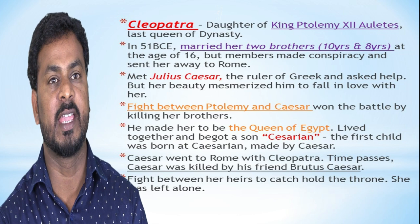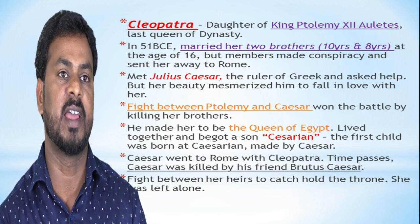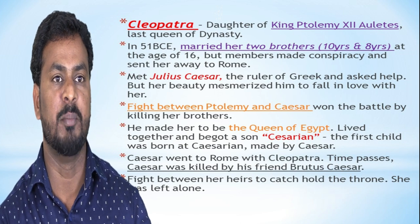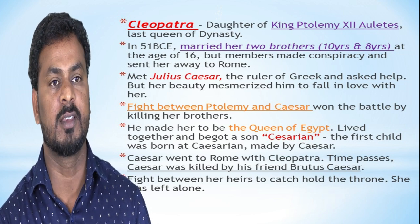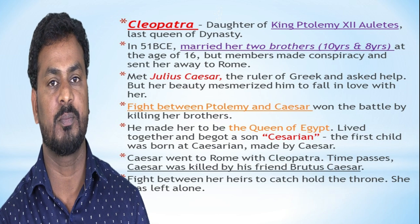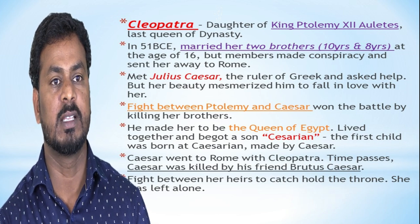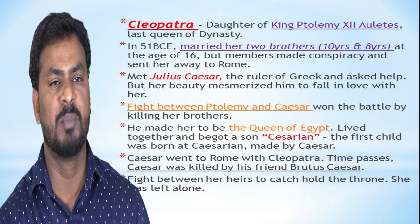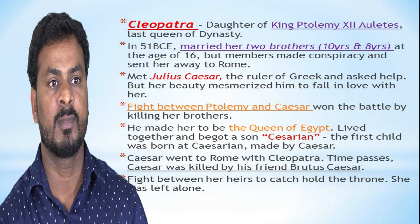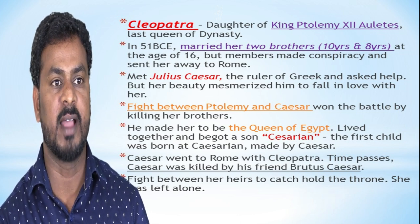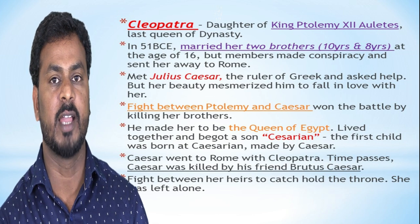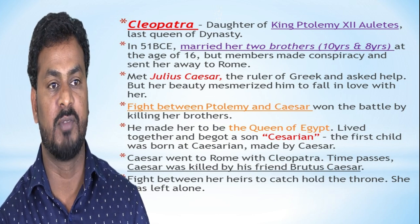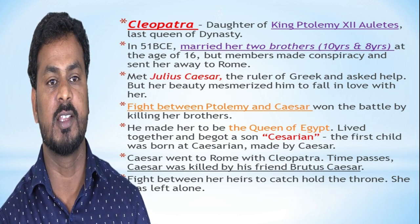Cleopatra — she is the daughter of King Ptolemy XII. She is the last queen of the dynasty. In 51 BC, she married two brothers who were 10 years and 8 years old. She married at the age of 16, but members of Egypt formed a conspiracy and sent her away to Rome. She met Julius Caesar, the ruler, and her beauty mesmerized him to fall in love with her. There was a fight between Ptolemy and Caesar. Caesar won the battle by killing her brothers and made her the queen of Egypt. Both lived together and had a son, Caesarion.